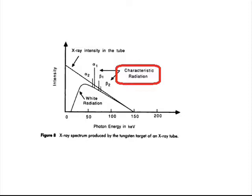The X-ray tube creates many photons with different energies. Lower energy photons are created toward the left side of the spectrum, with higher energy photons created in linearly decreasing numbers toward the right. Characteristic radiation peaks are observed around 60, 70, and 80 kilo electron volts, denoted alpha 1, alpha 2, beta 1, beta 2, etc. — corresponding to K-to-L, L-to-M, and K-to-M orbital electron transitions that produce characteristic X-ray photons.